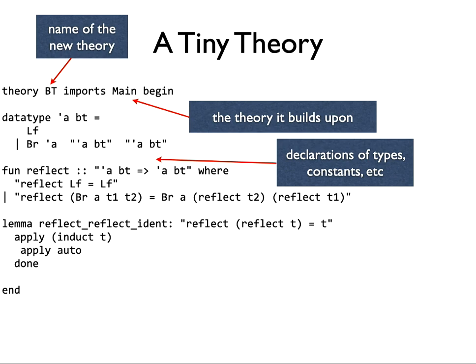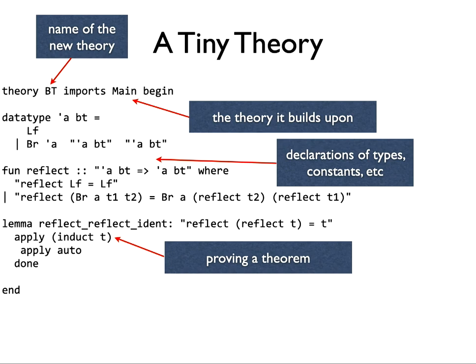The data type is binary branching binary trees — if any of you did the Tripos here, you've seen enough binary trees to make yourself sick in the first year. The function 'reflect' just does the obvious act of reflecting a binary tree on itself. The theorem we're trying to prove is that if you take a tree and reflect it on itself twice you get back to where you started.